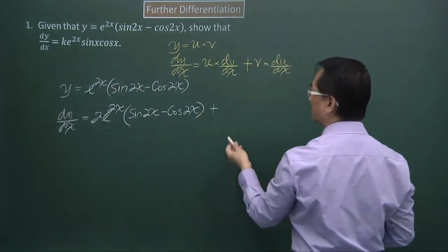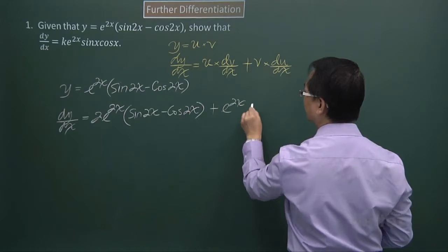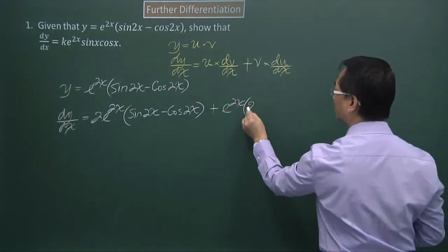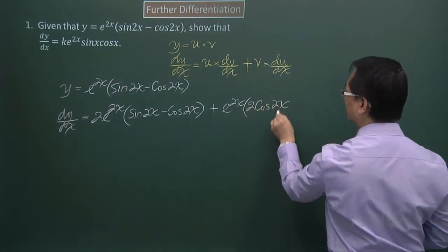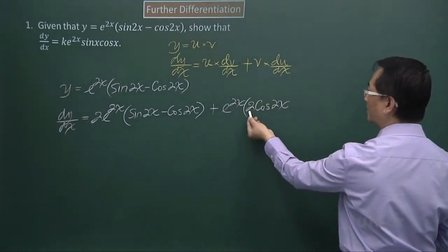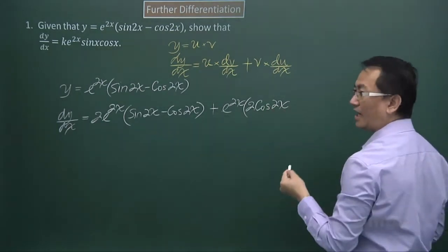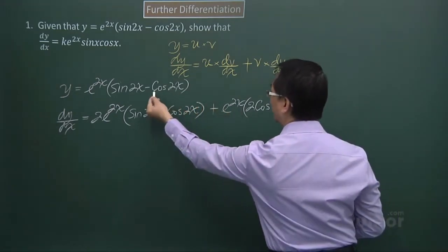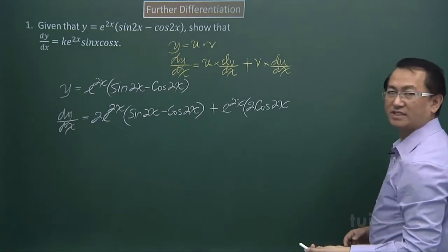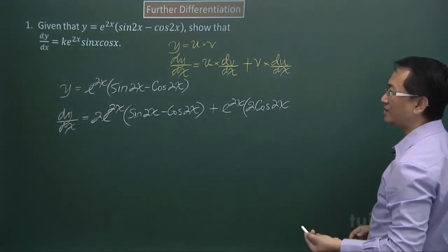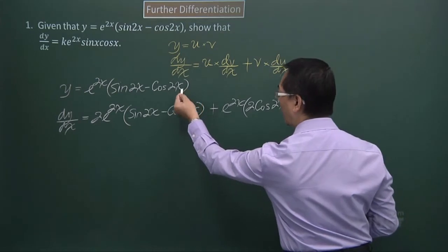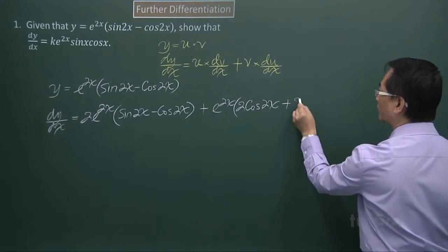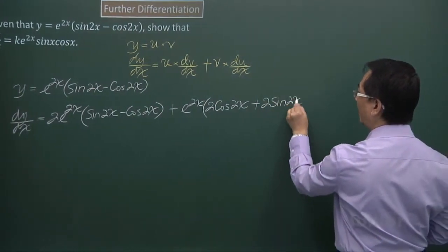Then next, keep e to the power 2x, but differentiate what I have here, sine 2x. Then I get 2 cos 2x. The 2 comes from the differentiation of the expression of the angle. Then when I differentiate the negative cos, I get positive sine 2x, but differentiating the 2x, I get a 2, so I have 2 sine 2x.